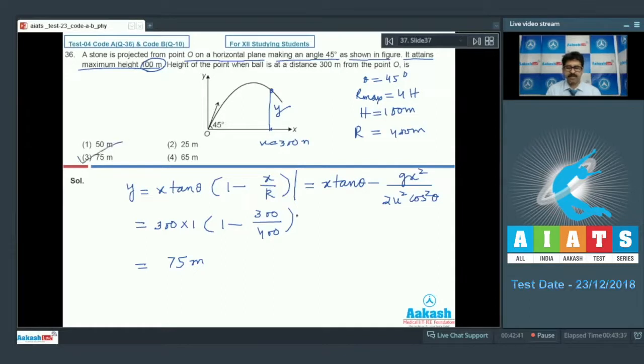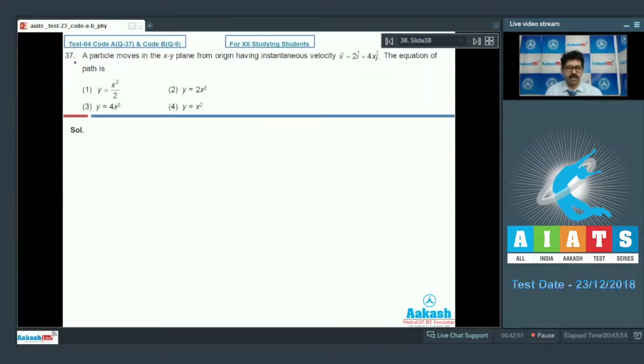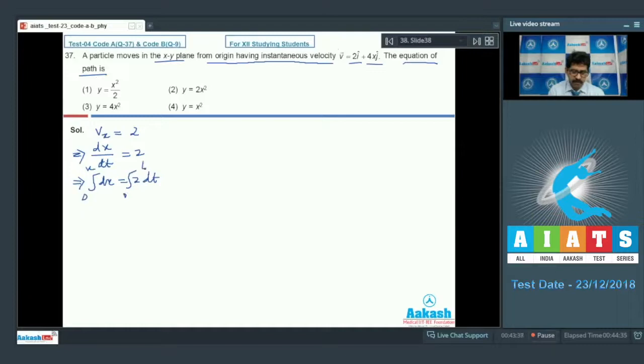So the correct option is option number 3. Question number 37. A particle moves in the xy plane from origin having instantaneous velocity 2i cap plus 4x j cap. The equation of the path means you have to find the relationship between y and x. X component of velocity given, vx is 2, and vx is dx by dt. So dx by dt is 2, that implies dx equals 2 dt. If you integrate it 0 to x and 0 to time, then you will find x equals 2t.